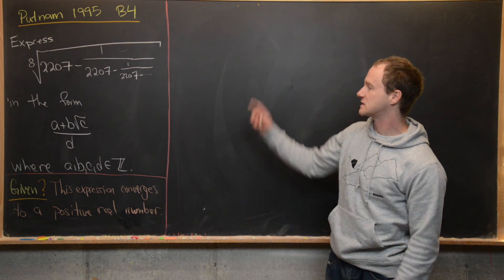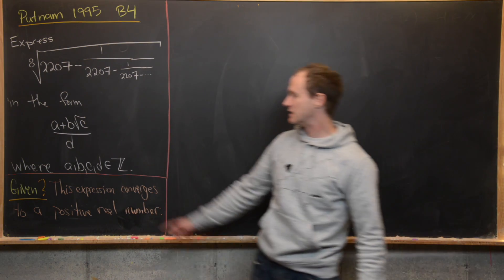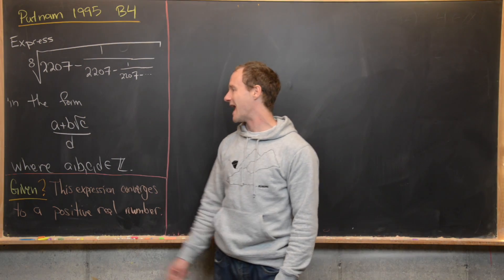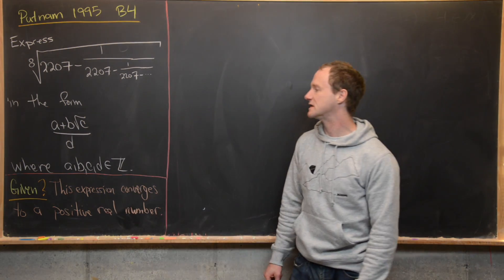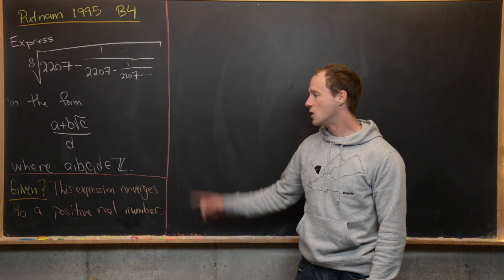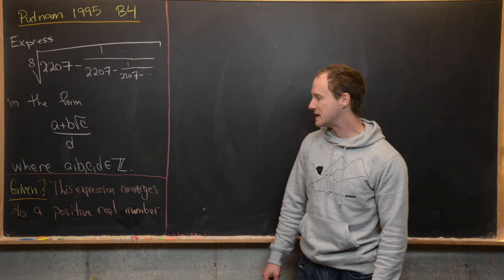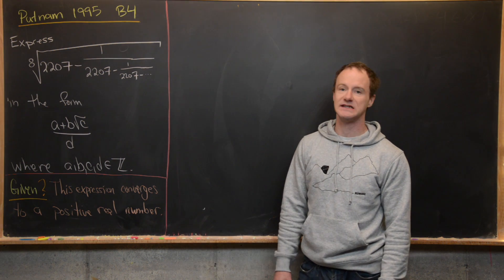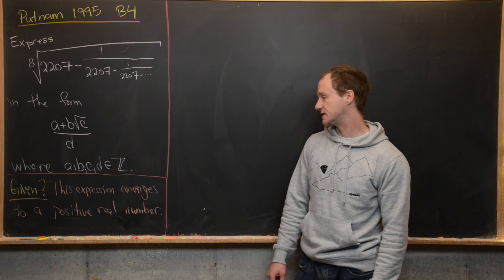Our goal is to express that in the form of a plus b times the square root of c, all over d, where a, b, c, and d are all integers.